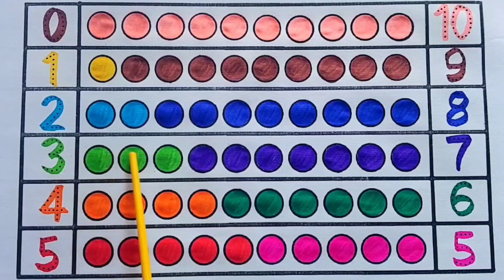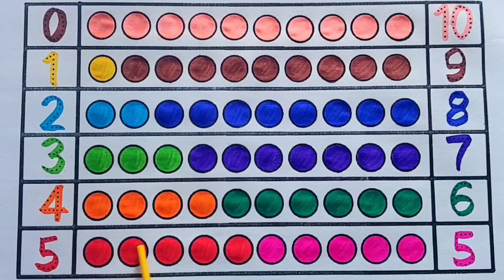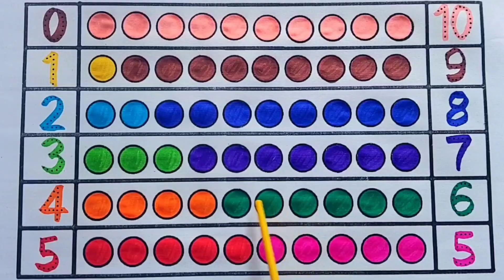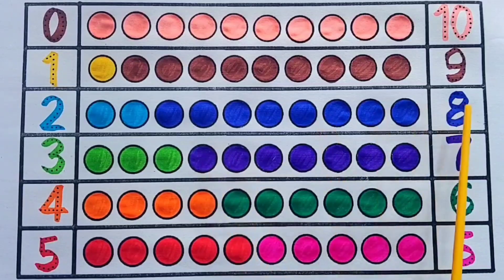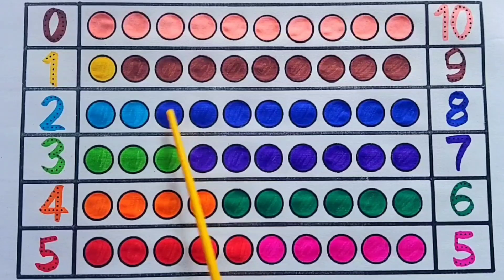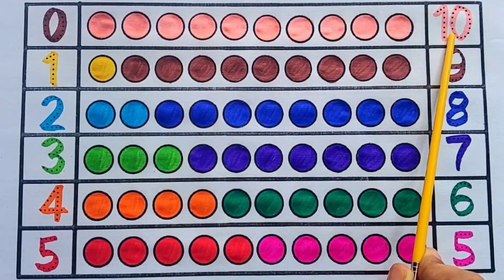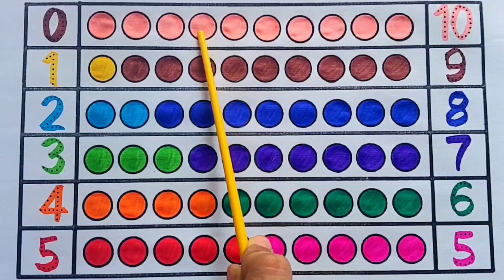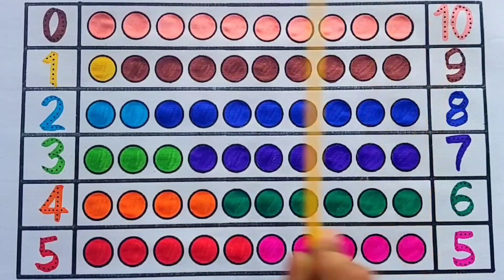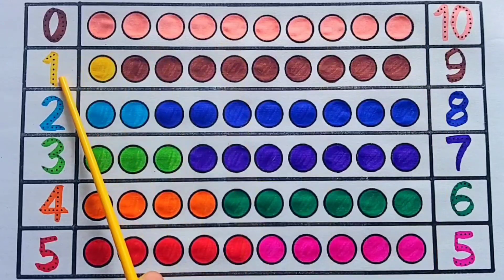Let's revise. 0, 1, 2, 3, 4, 5, 6, 7, 8, 9, 10 — counting circles from one up to ten.